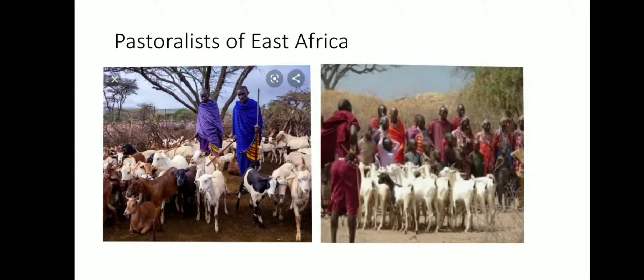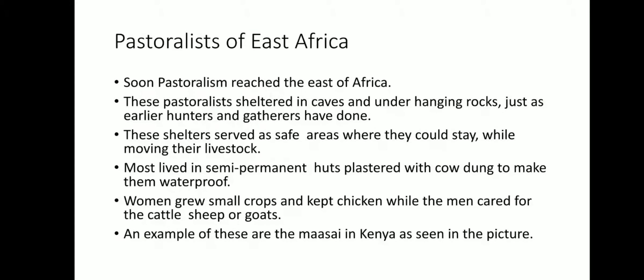Here is a picture of pastoralists of East Africa — modern-day Tanzania or Kenya. Pastoralism soon reached East Africa. These pastoralists sheltered in caves and under hanging rocks, just as earlier hunters and gatherers had done. These shelters served as safe areas while moving their livestock. Other pastoralists lived in temporary shelters, but the East African pastoralists lived in more semi-permanent huts plastered with cow dung to make them waterproof. Women grew small crops and kept chickens while the men cared for cattle, sheep, or goats. An example of this form of pastoralism is the Maasai in Kenya, as seen in the picture.